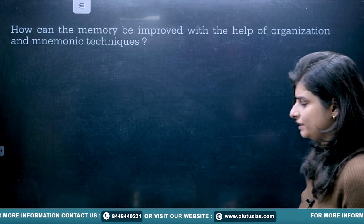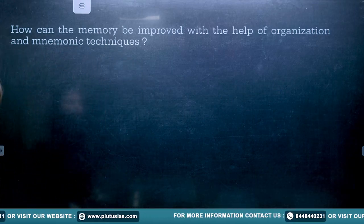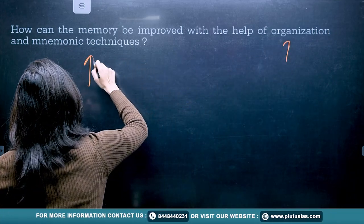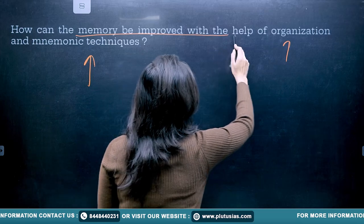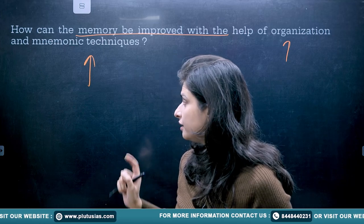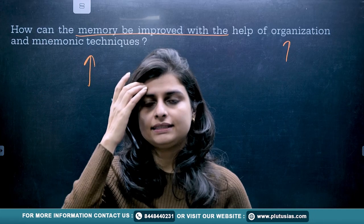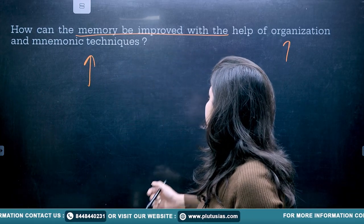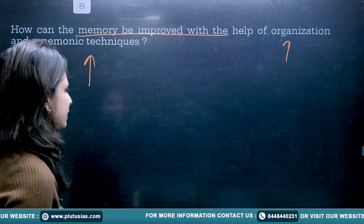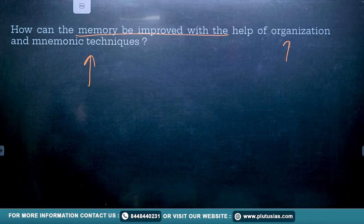Now let's move on to the next question. The next question says: how can memory be improved? Specifically, how can memory be improved with the help of organization and mnemonic techniques? You need to put light on two aspects: one is how the information is getting organized, and the other is how mnemonic techniques are being used to retain information in your memory.